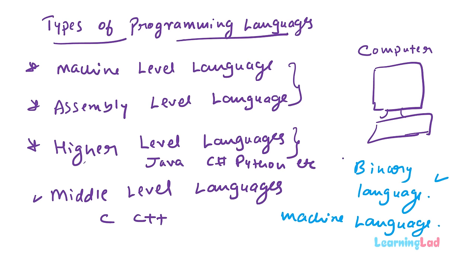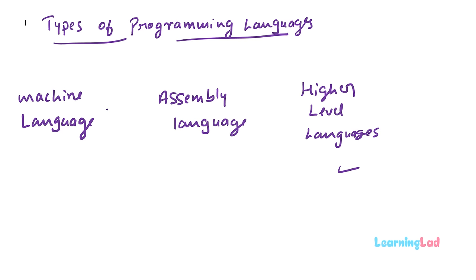Machine level language, being very close to the machine and directly understood by it, executes much faster than all other languages — its execution speed is very high. Assembly language has better execution speed than higher level languages but is a bit slower than machine level language. Then we have the higher level languages. In higher level languages, the code can be converted to machine code in two ways: compilation or interpretation.